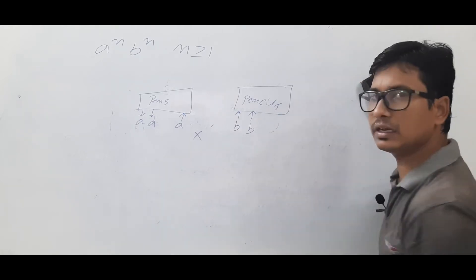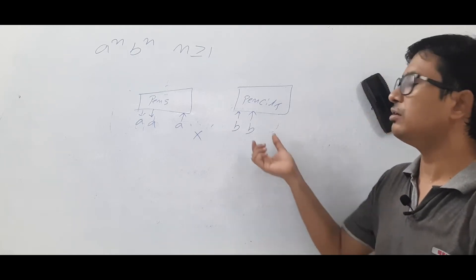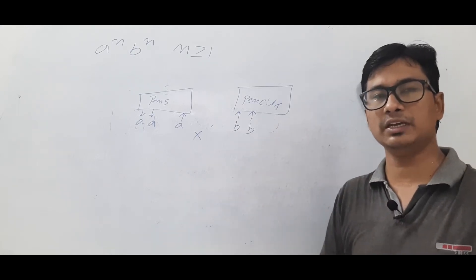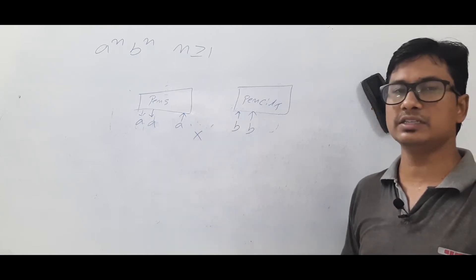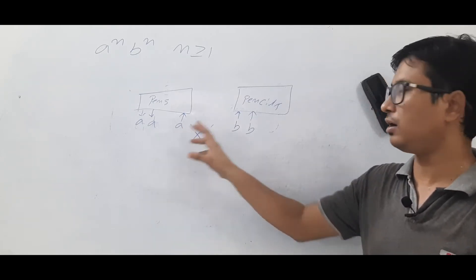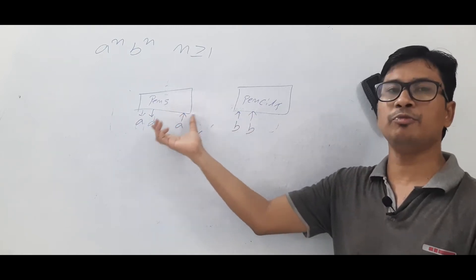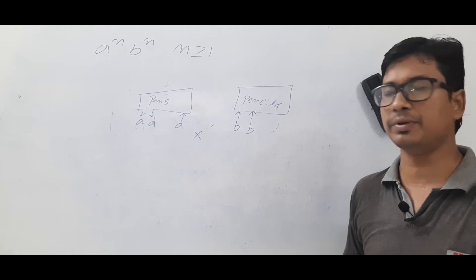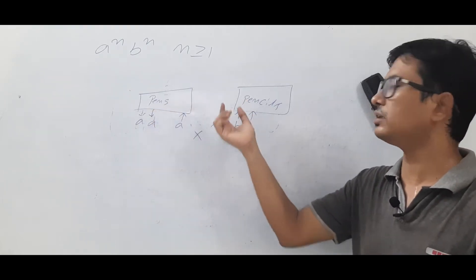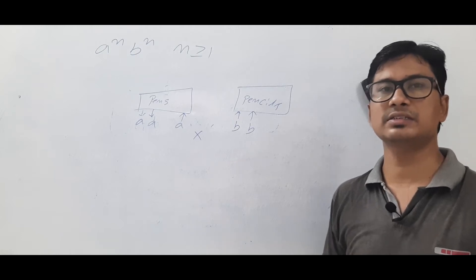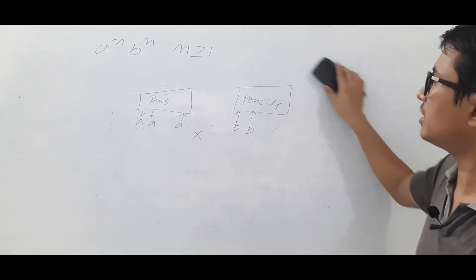At some point, he marks a pen as A but cannot find an unmarked pencil — meaning all pencils are already marked as B. In that case, he says the number of pens is not equal to the number of pencils, or that there are more pens than pencils. The Turing machine works the same way.